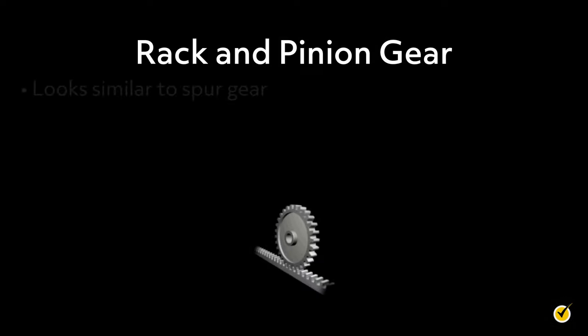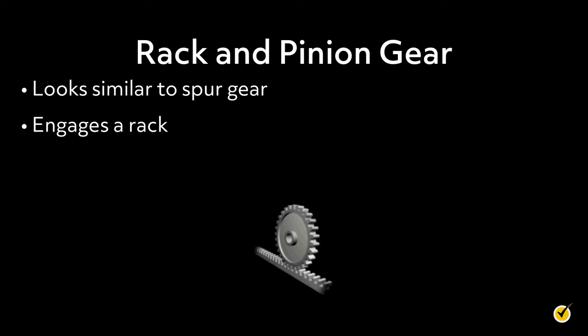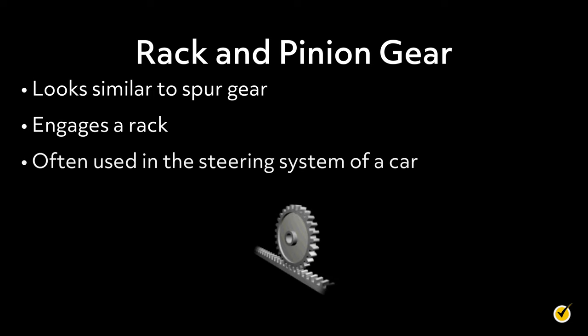A rack and pinion gear looks similar to the spur gear, but instead of rotating other gears, the gear engages a rack, which then slides left or right depending on which direction the gear is turning. These gears are used in the steering systems of many cars.